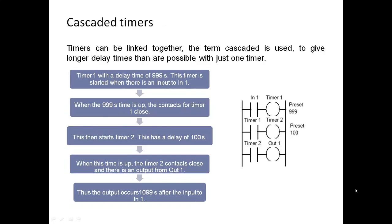Cascaded timers. Timers can be linked together. The term cascaded is used to give longer delay timers than are possible with just one timer. Timer 1 with delay time of 999 seconds. The timer is started when there is an input of IN1. When 999 seconds time is up, the contacts of timer 1 close. Then timer 2 starts with delay of 100 seconds. When the time is up, timer 2 contact closes and output from OUT1. Thus the output occurs 1099 seconds after completion of input 1.